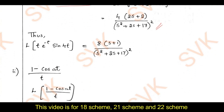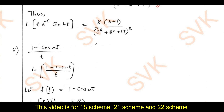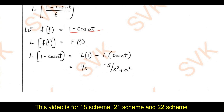Moving to sub-question (1 − cos(at))/t. We apply the property: Laplace of f(t)/t equals the integral from s to ∞ of F(s) ds. First find the Laplace of f(t) = 1 − cos(at): Laplace of 1 is 1/s, and Laplace of cos(at) is s/(s² + a²). This is F(s).